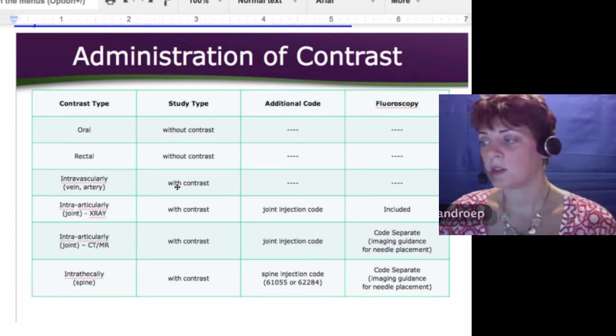Intravascularly, you can code the study type as with contrast. That's what they let you do to get that higher RVU.